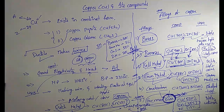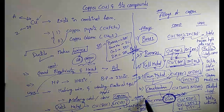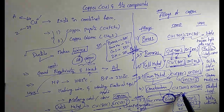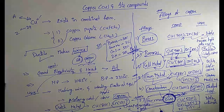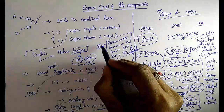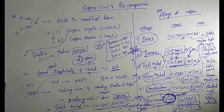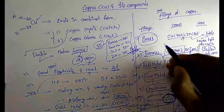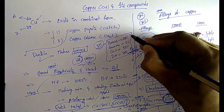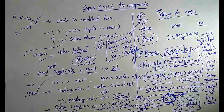So copper combines with zinc, copper combines with tin, and copper combines with nickel — and in these three combinations we have the various alloys of copper. Thank you very much.